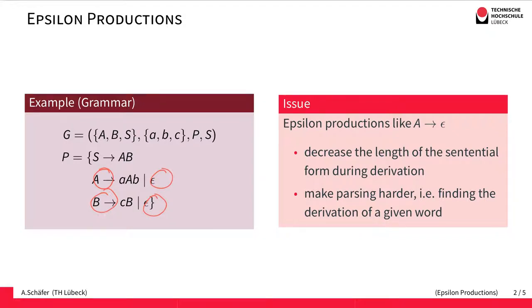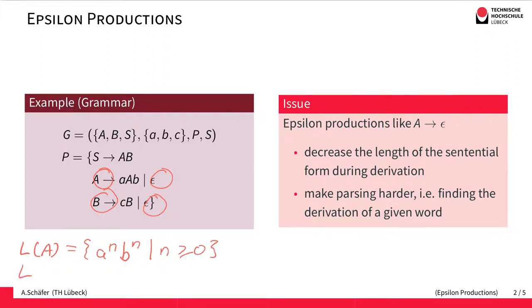So why do we like these productions? They make it easier for us to specify a grammar. For example, for the non-terminal A, the language of all words derivable from A is the language of n A's followed by n B's where n is greater or equal to zero. We can also directly see what kind of language we can derive from the non-terminal B.